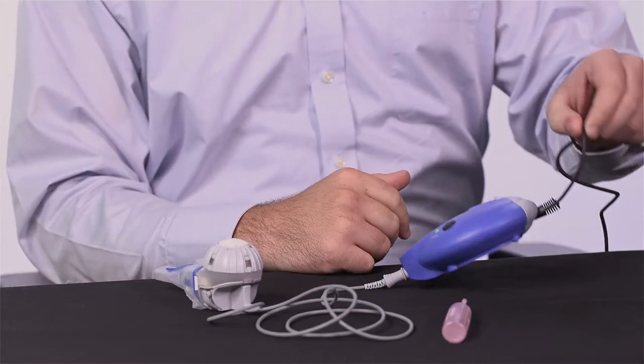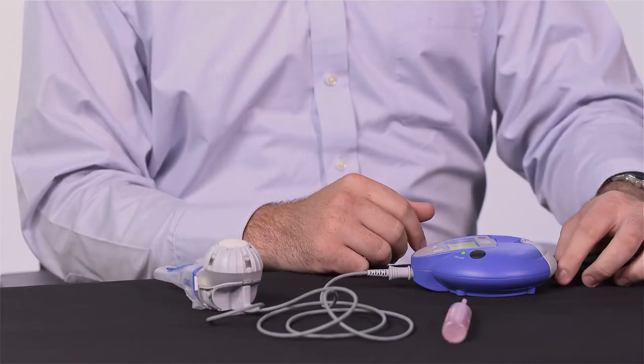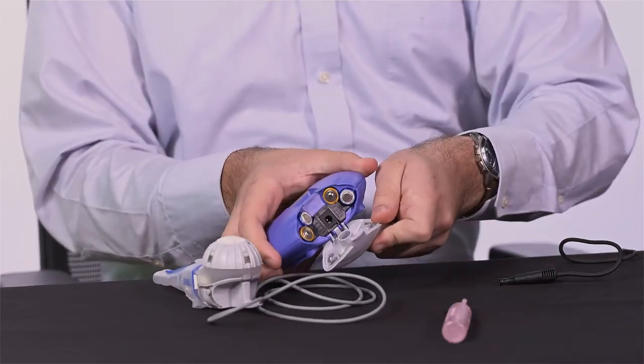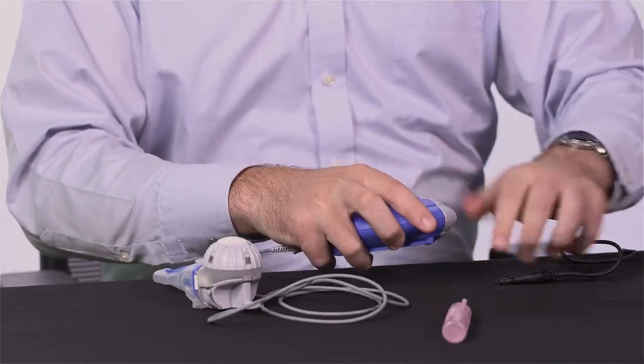The eTrack nebulizer comes with a power adapter, but can also be powered by four AA batteries. We recommend that you have additional batteries with you at all times, especially if you are traveling.